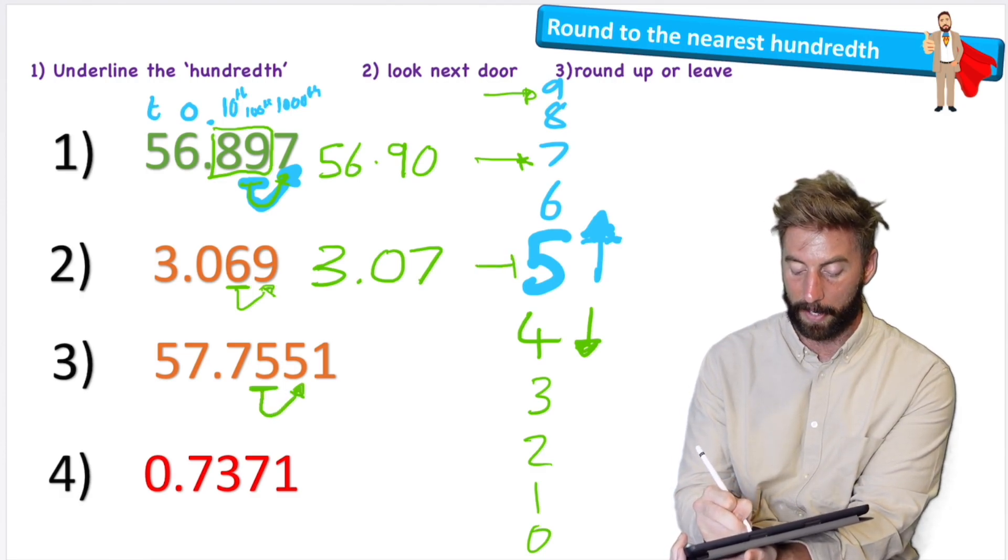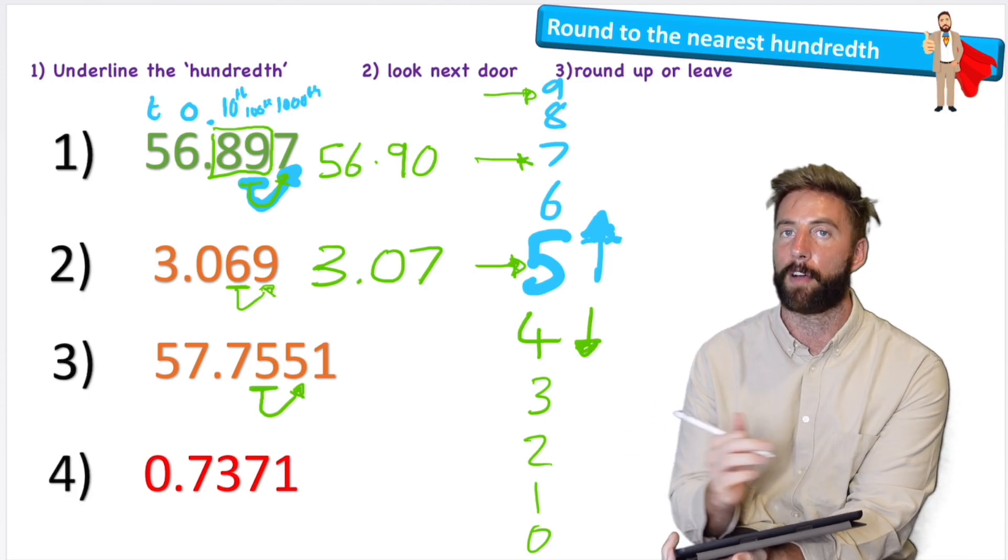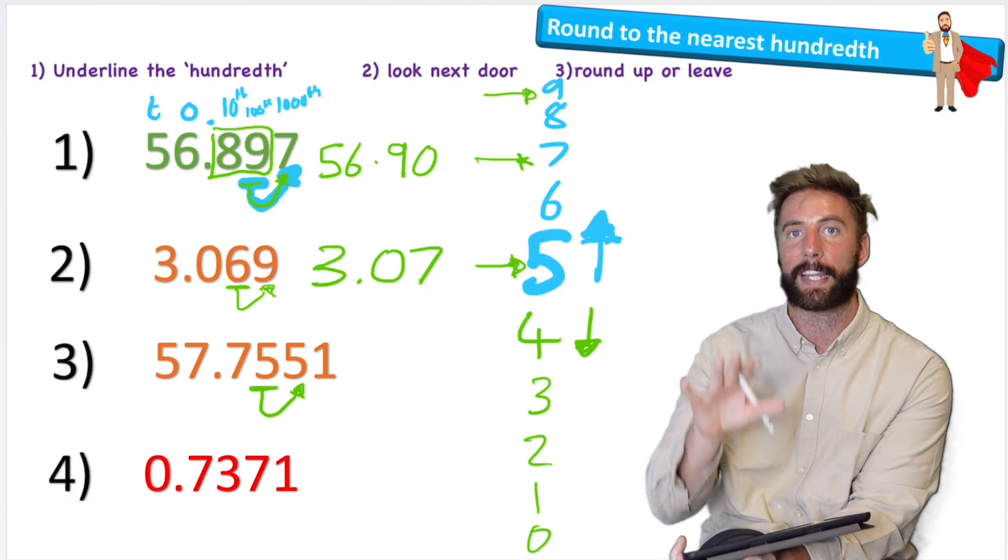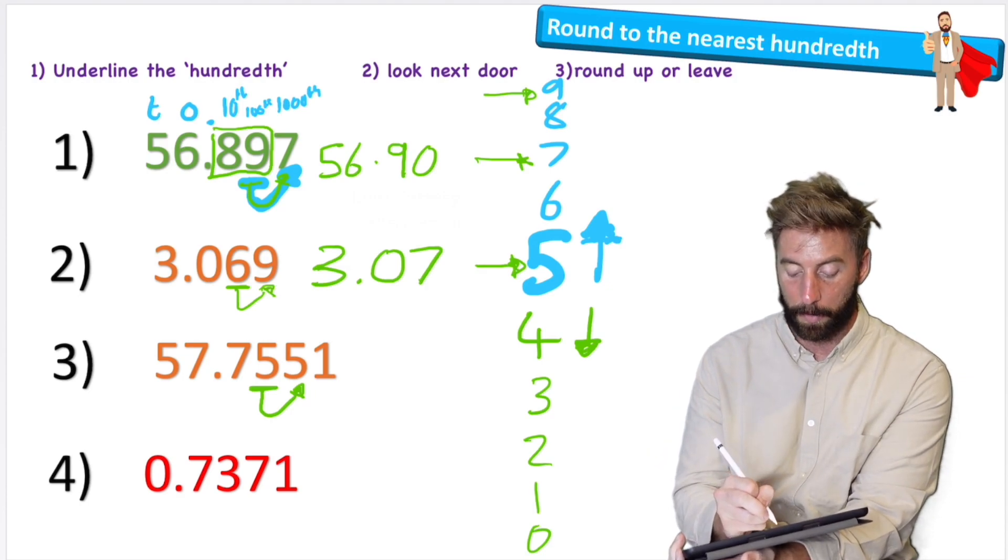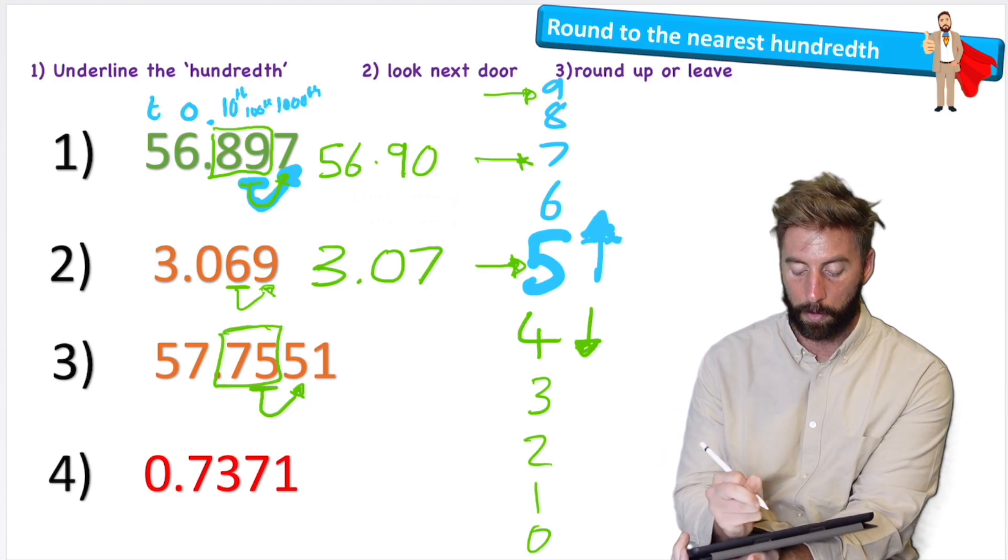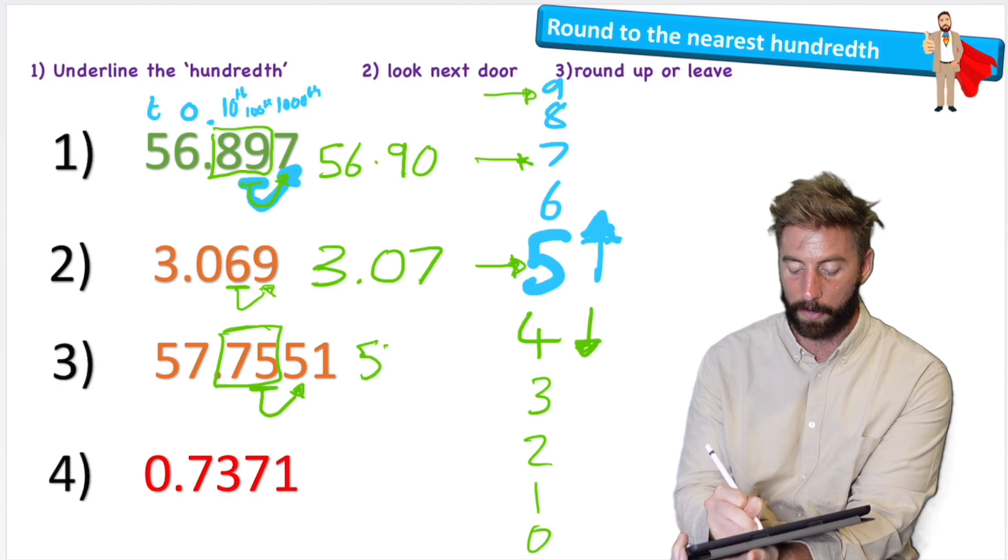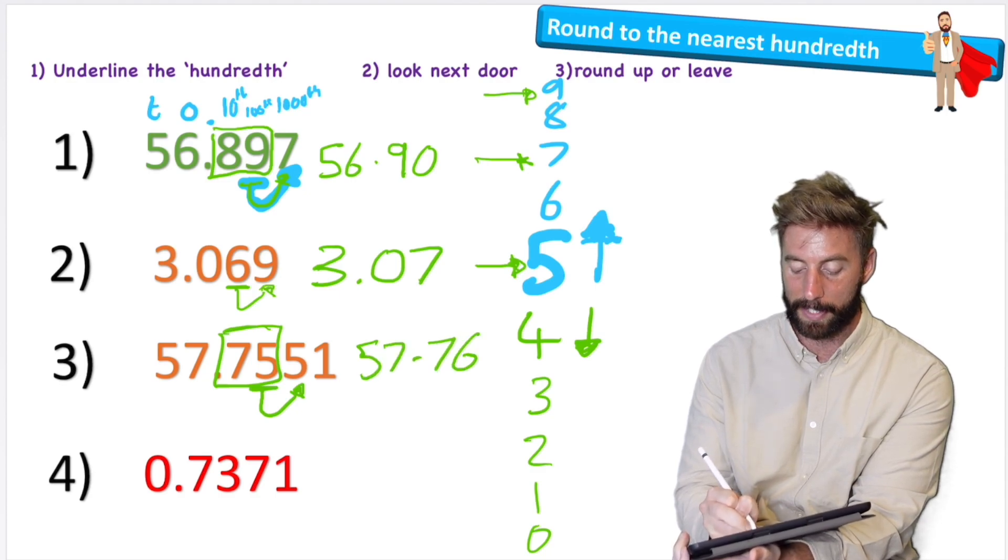Remember, five or more let it soar, four or less let it rest. It's five or more, so I'm going to bump this number up. So my 75 becomes 57.76. Great.